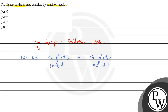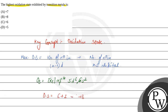Here we can know that the maximum oxidation state for transition metals is plus 8. So, what is the maximum oxidation state? The answer should be plus 8.